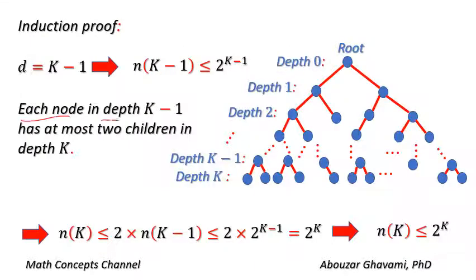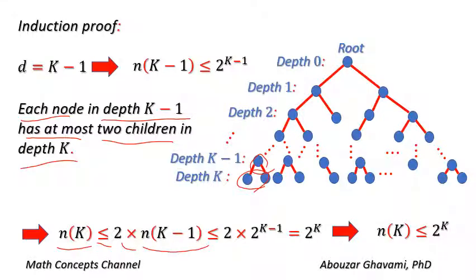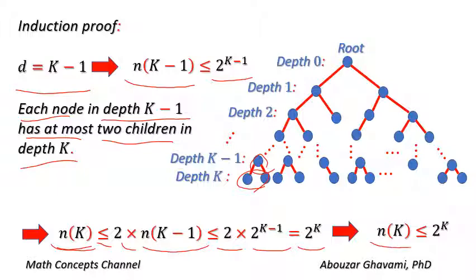Each node in depth K minus one has at most two children in depth K. Thus N of K is less than or equal to two times N of K minus one. By the induction assumption, N of K minus one is less than or equal to two to the power of K minus one. Therefore N of K is less than or equal to two times two to the power of K minus one, which equals two to the power of K. Thus N of K is less than or equal to two to the power of K — that is the maximum capacity of depth K.